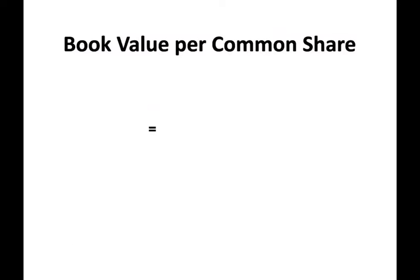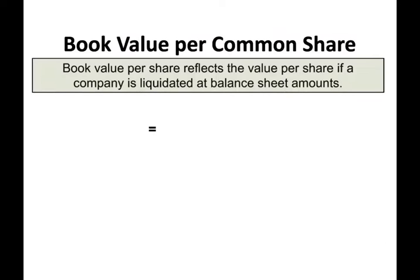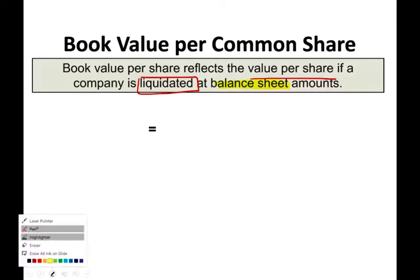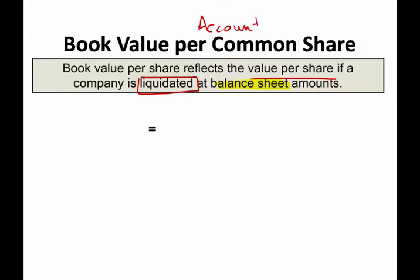Today's topic is the book value per common share. The book value reflects the value per share if a company is liquidated at the balance sheet amount. That means if the company liquidates today and sells everything based on their balance sheet amount — this is an important concept that students overlook. It means based on accounting figures, not fair value.